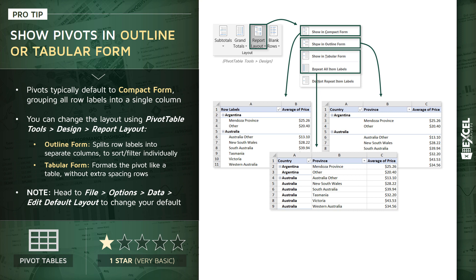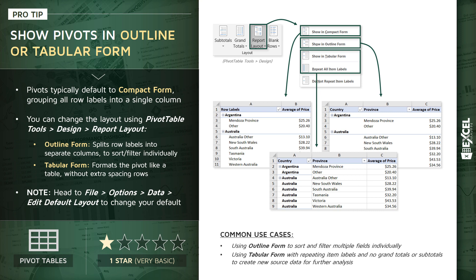You can change your pivot table behavior and adjust your default from compact form to something like outline or tabular. To recap the common use cases: outline form is a great way to explore your data and sort and filter multiple fields individually. Tabular form with repeating labels and no grand totals or subtotals can be the perfect approach to create new source data that you can package up, copy, paste, and use for other analytical purposes.